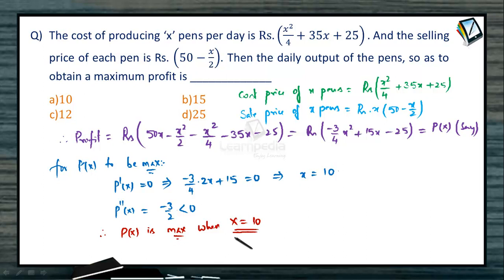But what is x? The number of pens that produce per day. So what is the maximum number of pens that should be produced to have a maximum profit? Yes, that is 10 pens should be produced in order to obtain a maximum profit.